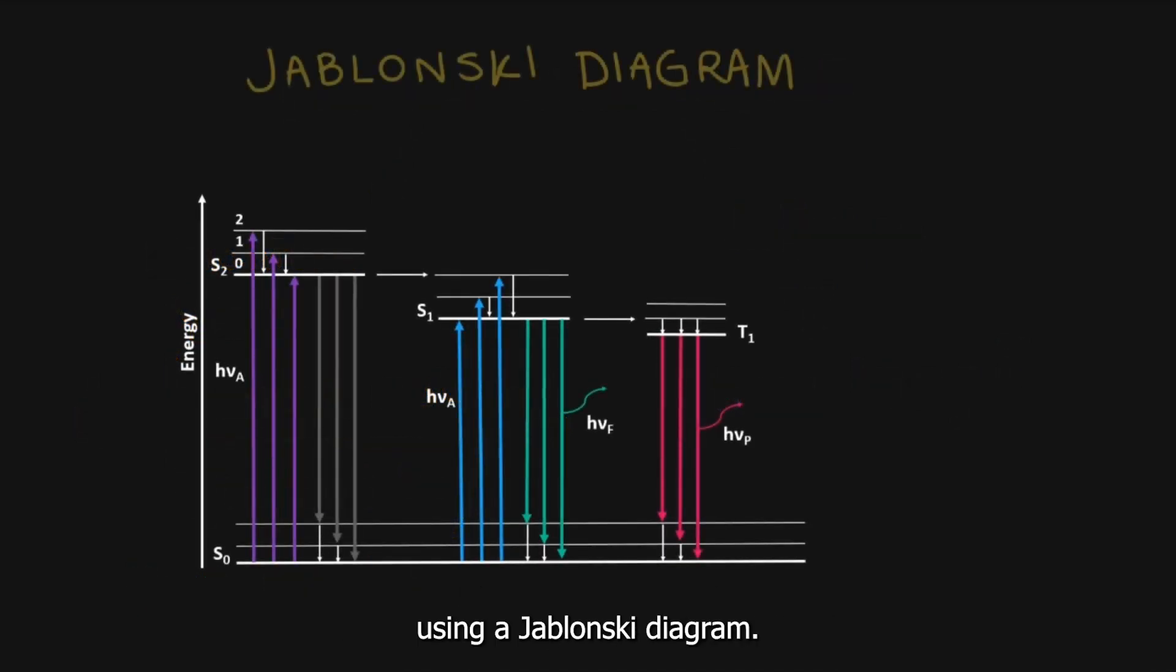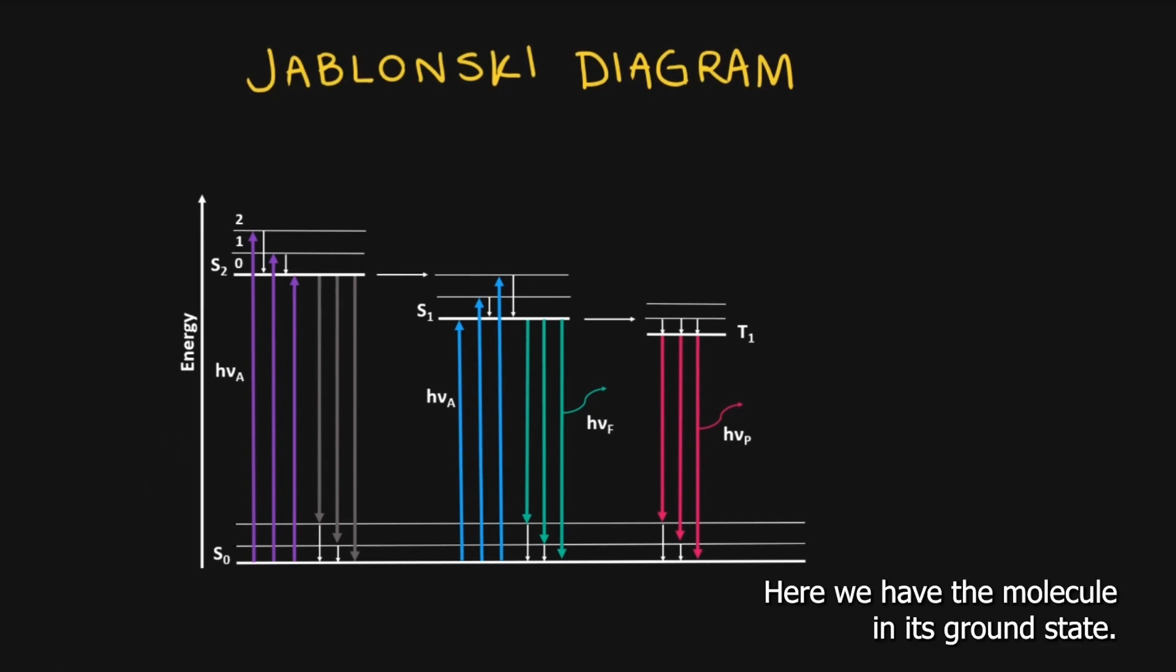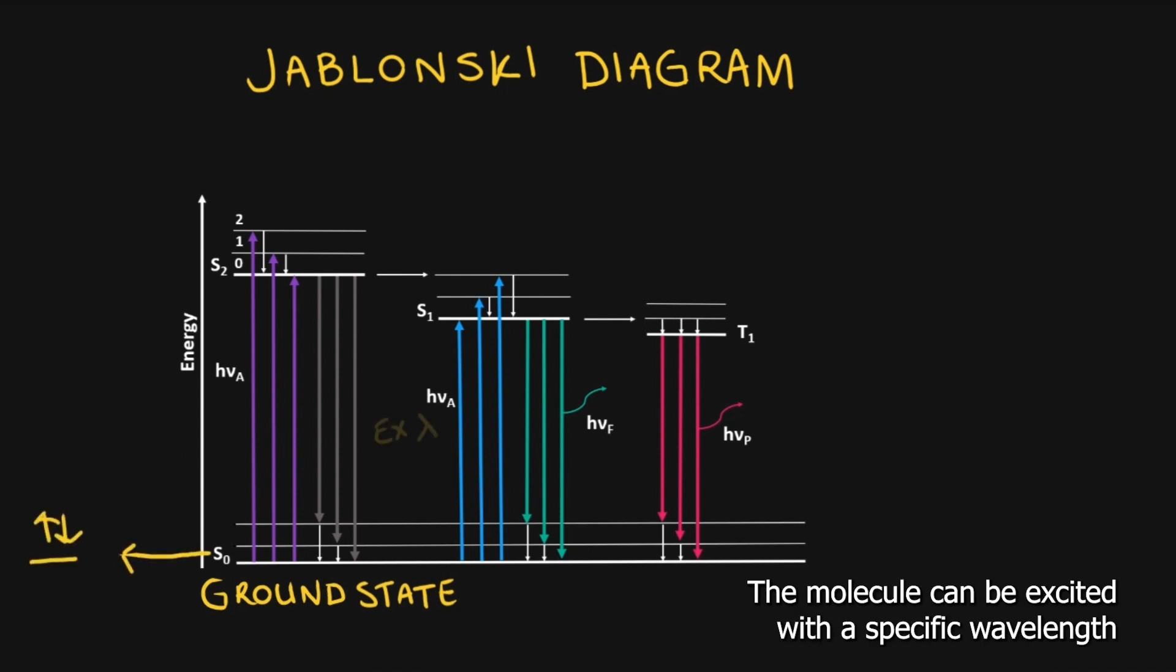Photoluminescence is often discussed using a Jablonski diagram. Here we have the molecule in its ground state. The molecule can be excited with a specific wavelength of light to the first or even the second excited state.